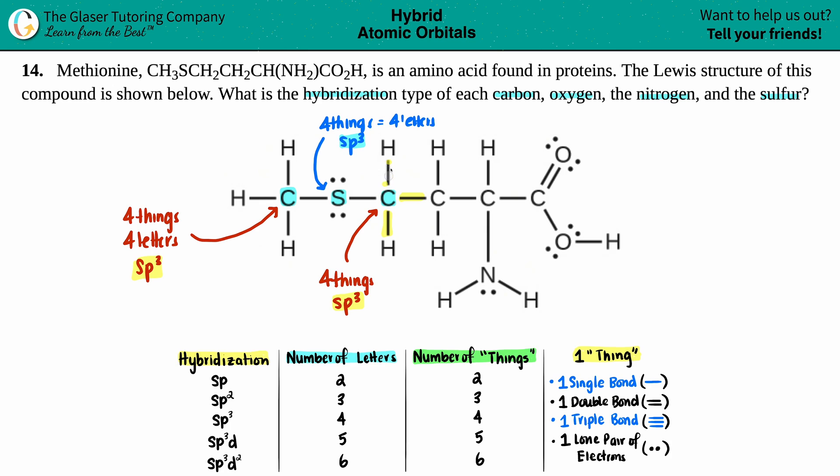Next. Let's erase. We're going to the next carbon, this guy. Let me use a different color. One thing, single bond. Two things, single bond. Three things, single bond. Four things, single bond. No lone pairs. Four things, four letters. SP3.